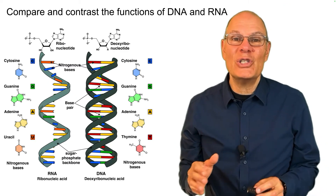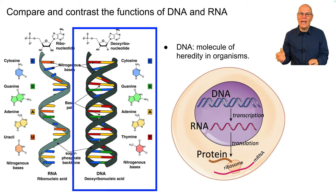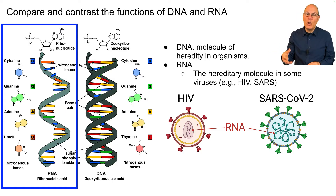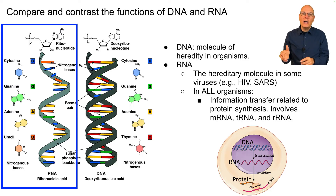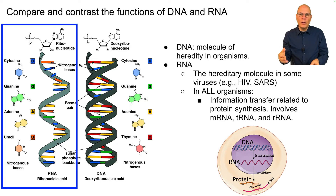Compare and contrast the functions of DNA and RNA. DNA is the molecule of heredity in all organisms — all cell-based life has DNA as the stuff that genes are made of. RNA is the hereditary molecule in some, but not all, viruses. Viruses that are RNA-based include HIV and SARS, a form of which caused the COVID-19 pandemic. In all organisms, RNA is involved in information transfer related to protein synthesis — how DNA becomes RNA and how RNA becomes proteins — including forms of RNA such as mRNA, tRNA, and rRNA.